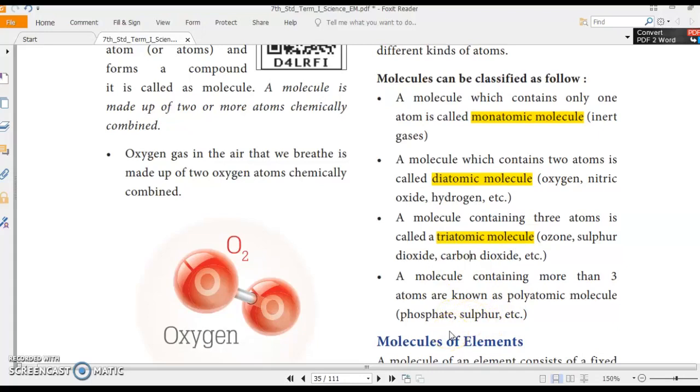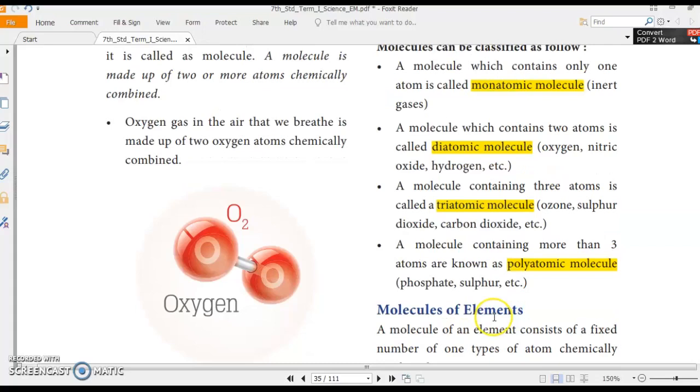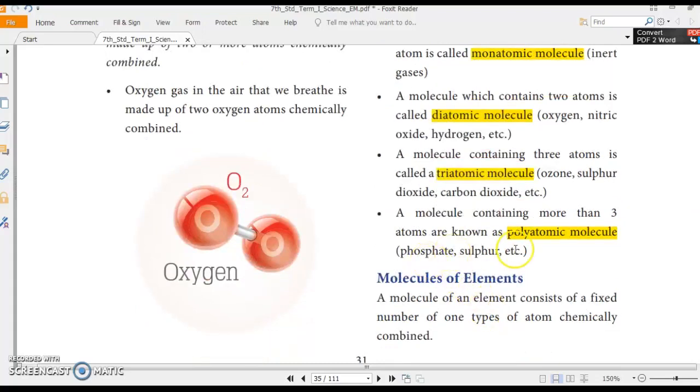Alright. Then comes to polyatomic molecules. For example, phosphate has one atom of phosphorus and four atoms of oxygen in it. So total five atoms. Okay. Then sulfur has eight atoms of sulfur in a single molecule of sulfur. So total eight atoms. That is more than three atoms. Right? So phosphate and sulfur is considered to be polyatomic molecules.